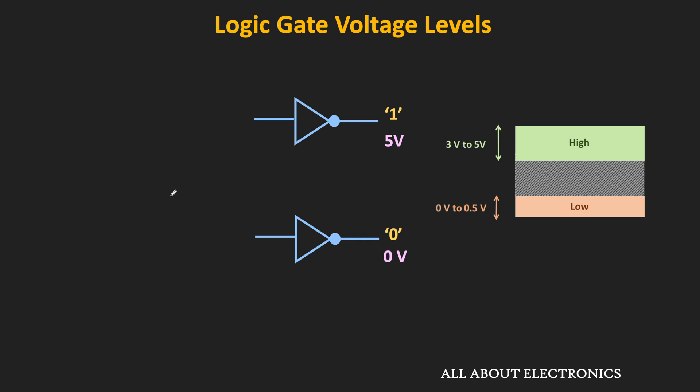Similarly, for the output side also, for logic 1 and logic 0, some specific voltage ranges are defined. For example, when the output voltage is between 3V and 5V, then it will be considered as logic 1. And whenever the output voltage is between 0 and 0.5V, then it will be treated as logic 0. This intermediate range is the undefined range, meaning the output voltage should not fall in this particular range. So in short, for any logic gate, some input and output voltage ranges are defined, and whenever either input or output falls within that particular range, it will be considered as either logic 1 or logic 0.